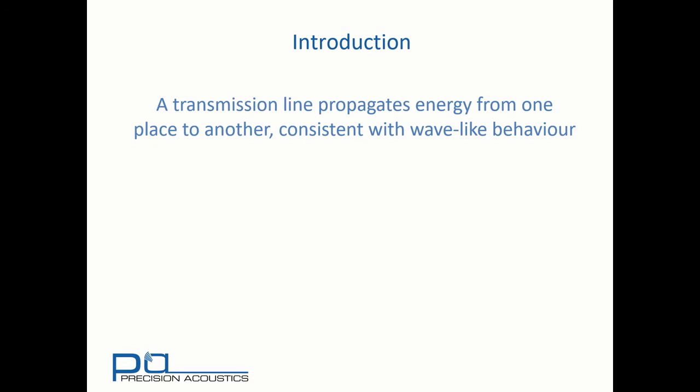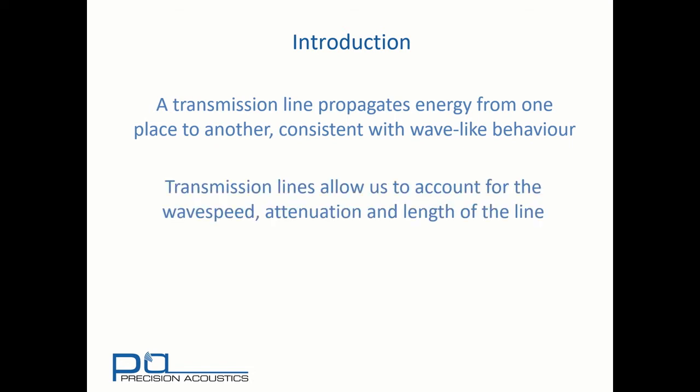Throughout this tutorial we use the term transmission line to mean a mathematical and physical concept that allows us to propagate energy from one place to another in a manner consistent with wave-like behaviour. Transmission lines allow us to account for the wave speed, attenuation and length of the line. And their concepts are applicable equally to acoustic and electromagnetic propagation. A previous tutorial in this series discusses electrical-acoustical analogies and we will be looking at both acoustic and electrical examples of transmission lines throughout this tutorial.